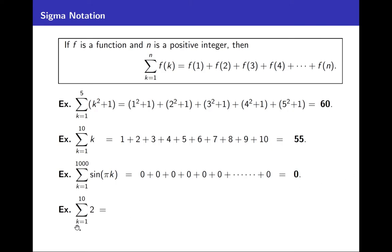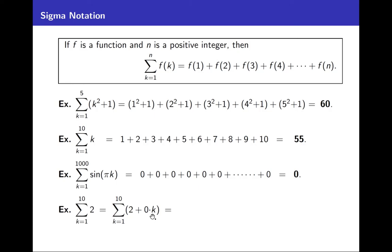Another example: the sum from k = 1 to 10 of 2. The constant 2 is just a constant function where whatever k you plug in, you get 2. If it bothers you that there's no place to plug in k, replace 2 with 2 + 0·k — so for each k you get 2 + 0 = 2. You're just adding 2 to itself ten times, so you get 20.